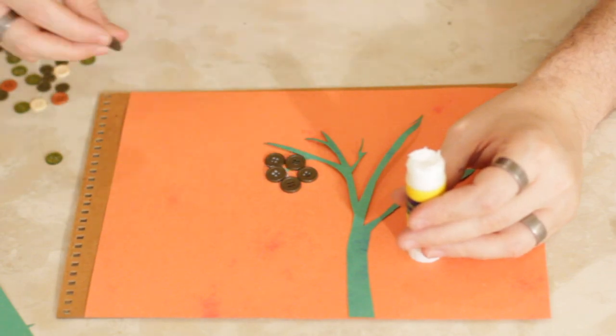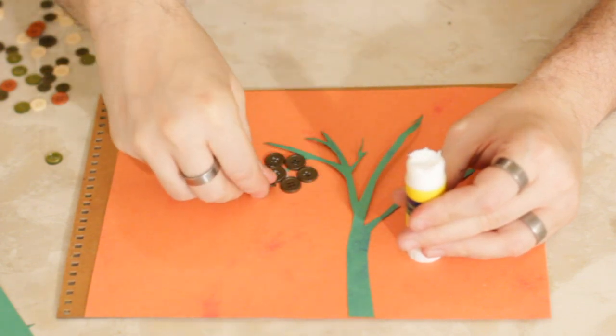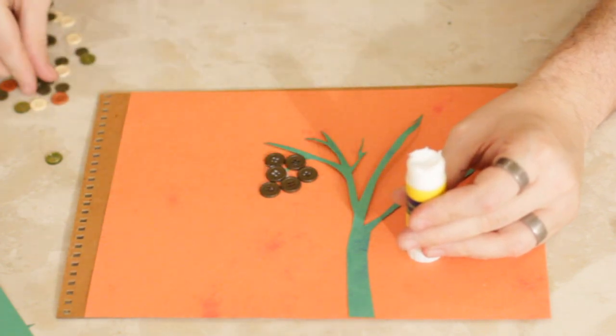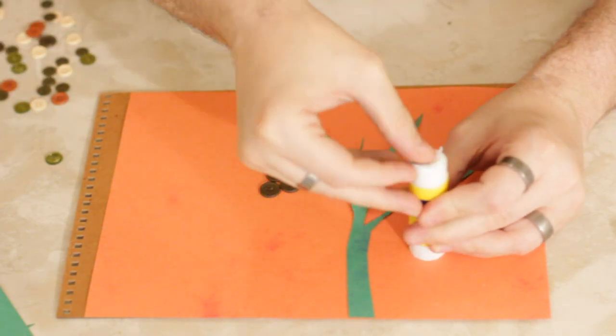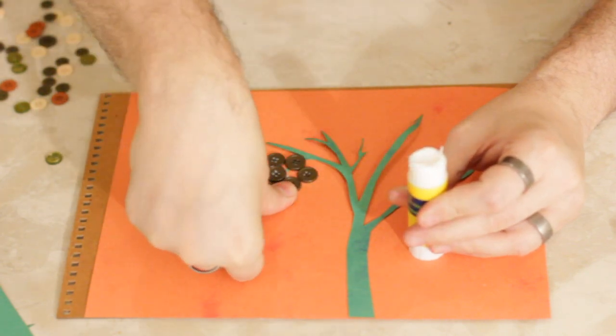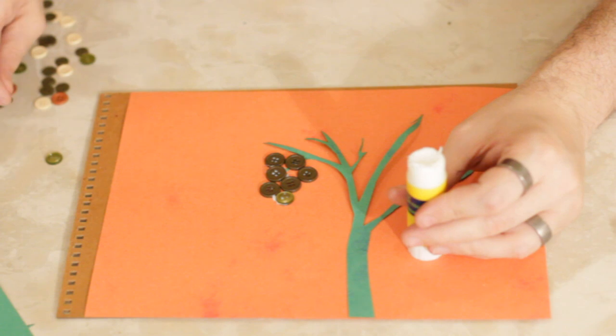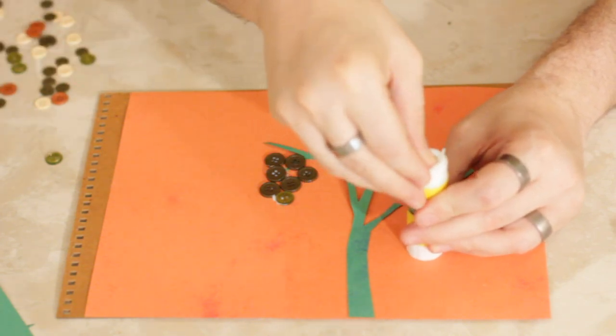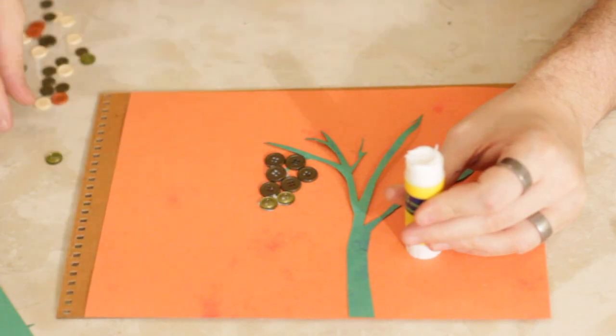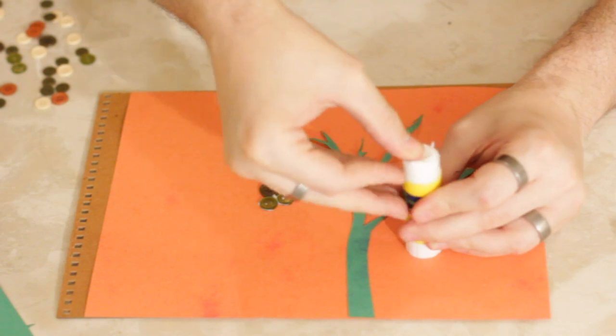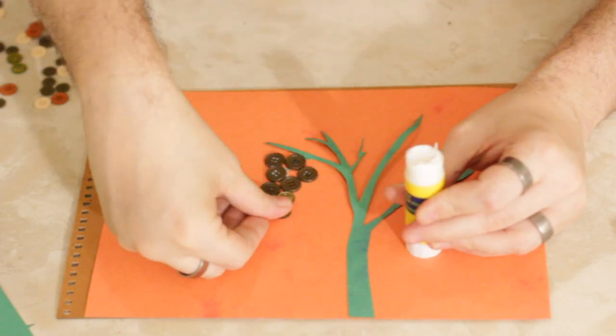You might be able to find edible buttons, that'd be pretty cool, but probably you don't want to put these in your mouth. So anybody who is under the age of, I'm even gonna go on a limb here, I'm gonna say 23. If you're under 23 years old, definitely you want to do this around your parents because they're gonna be able to tell you whether or not you should be eating these buttons, and the answer is probably no.